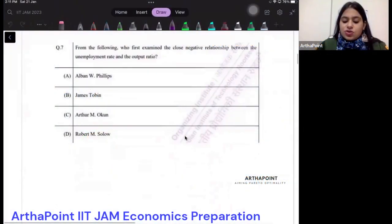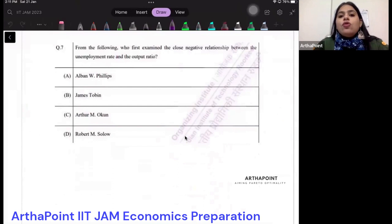The next question: from the following, who first examined the close negative relationship between unemployment rates and output ratio?